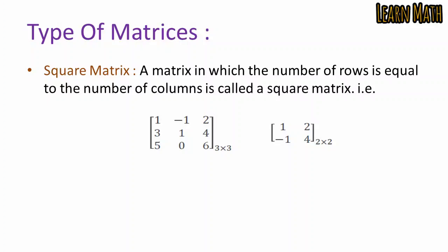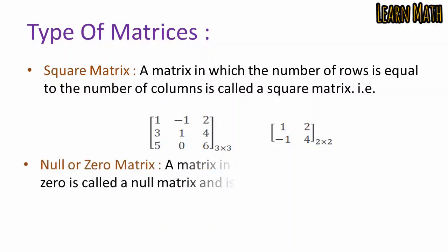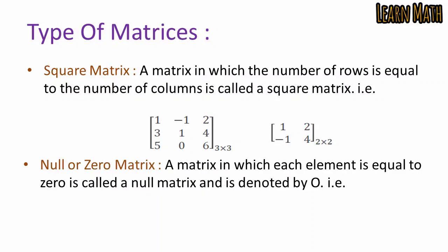A null or zero matrix is a matrix in which each element is equal to zero. It is denoted by O. All elements in such a matrix are zero, so it is called a null matrix or zero matrix.